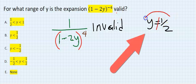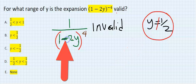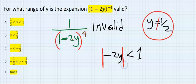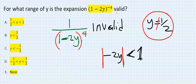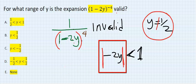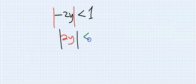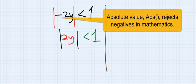So y must not equal one half. We also need to check the negative term. The absolute value of minus 2y must be less than one — written as |−2y| < 1. If this condition holds, the expansion converges; whenever the absolute value equals one we have a problem. This can also be written as 2y must be less than one, so y must be less than one half.